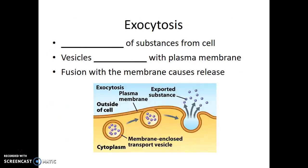If materials are being released from the cell, this is known as exocytosis. Sometimes cells will do this to get rid of waste products, or if they need to secrete a material — whether it's hormones, mucus, or some other function of that particular cell. The way exocytosis works is that vesicles fuse with the plasma membrane, and fusion with the membrane causes release.